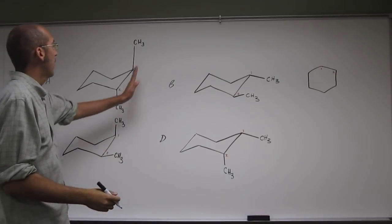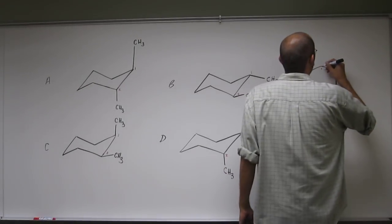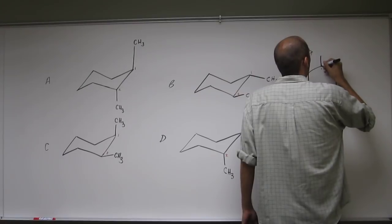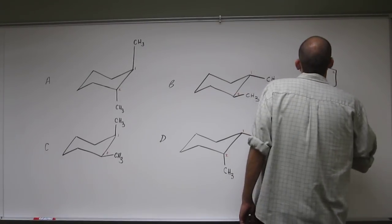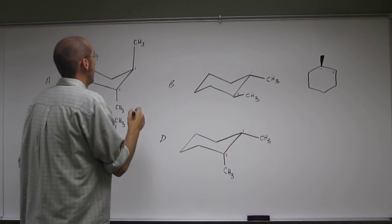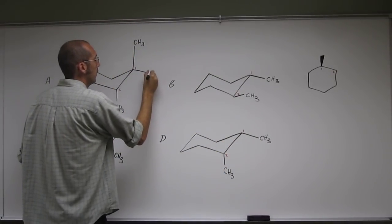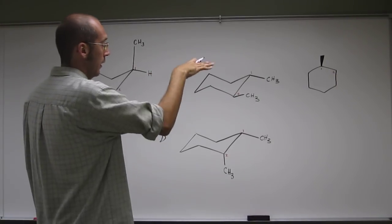Whenever I have an axial on this one position, I'll put it facing towards me. So that means that the equatorial is the H there and it is back.